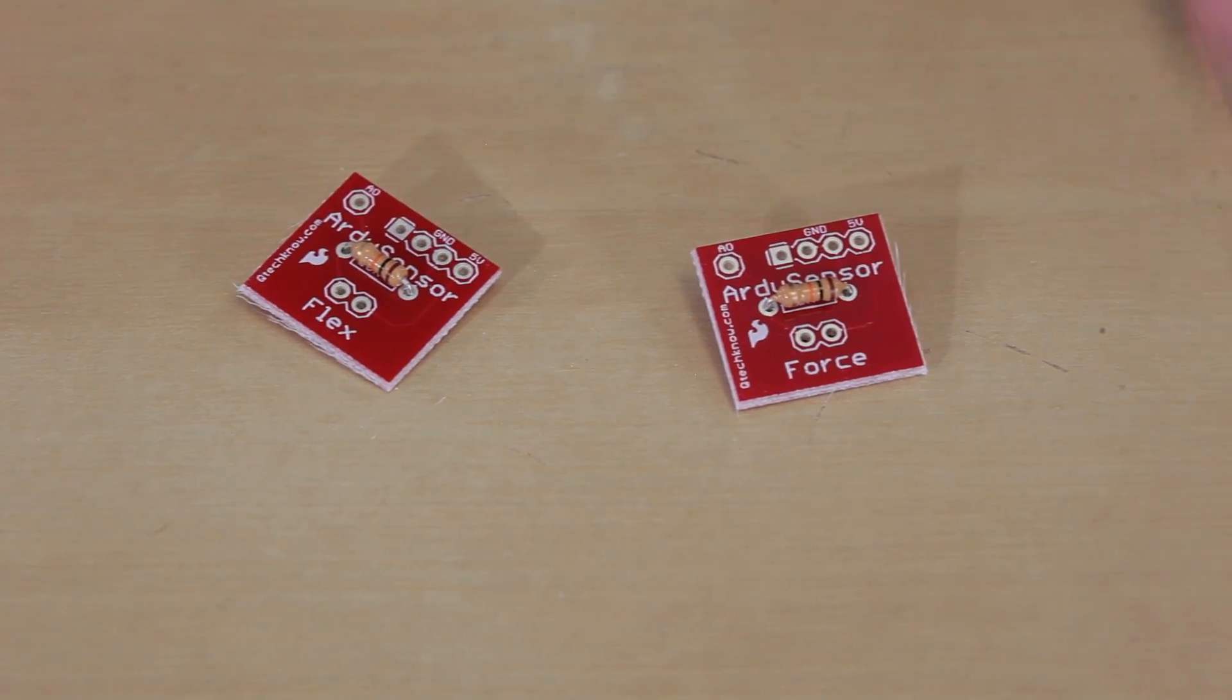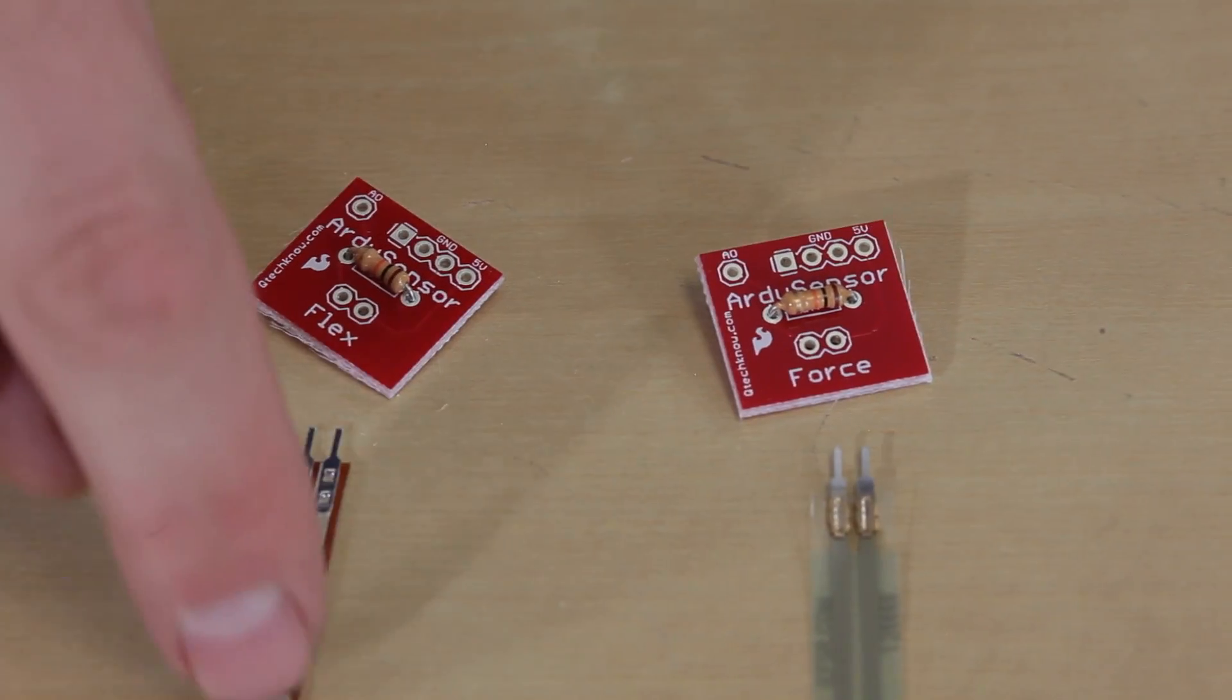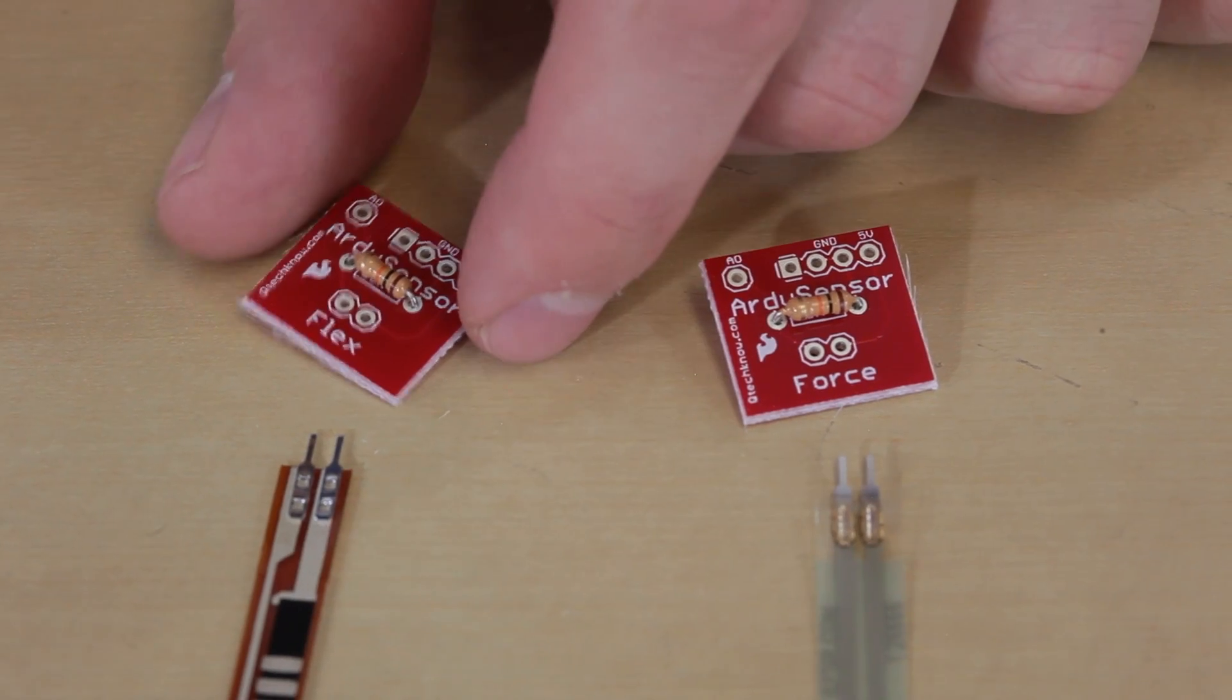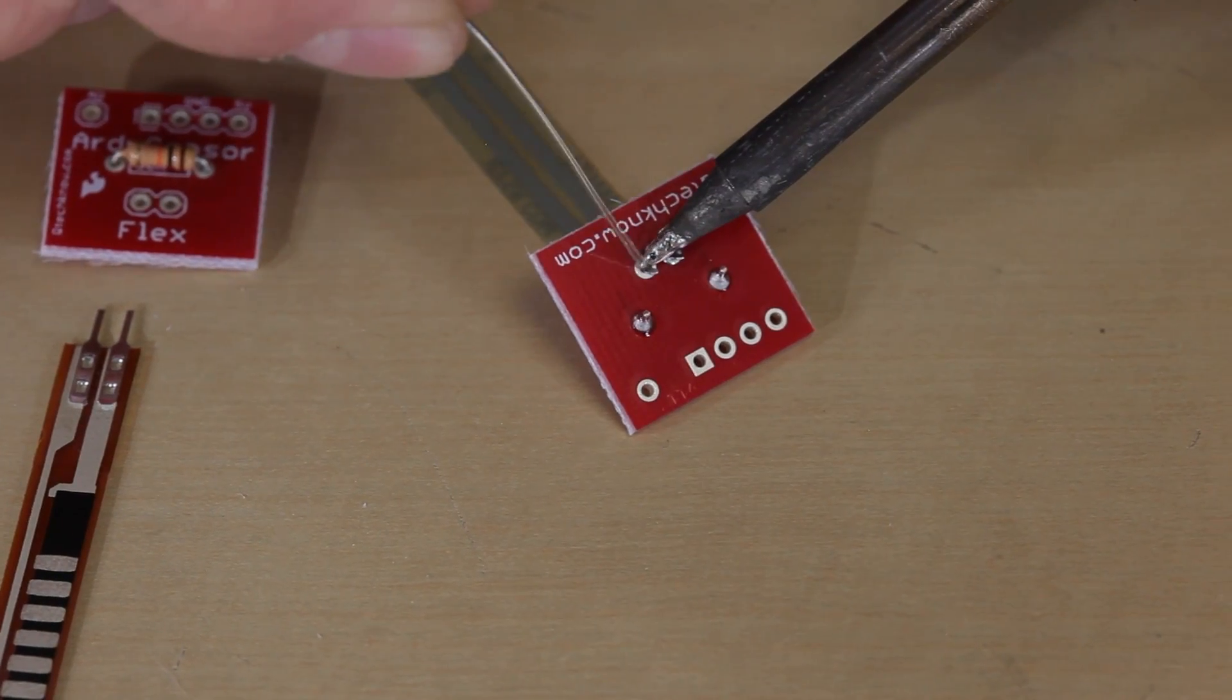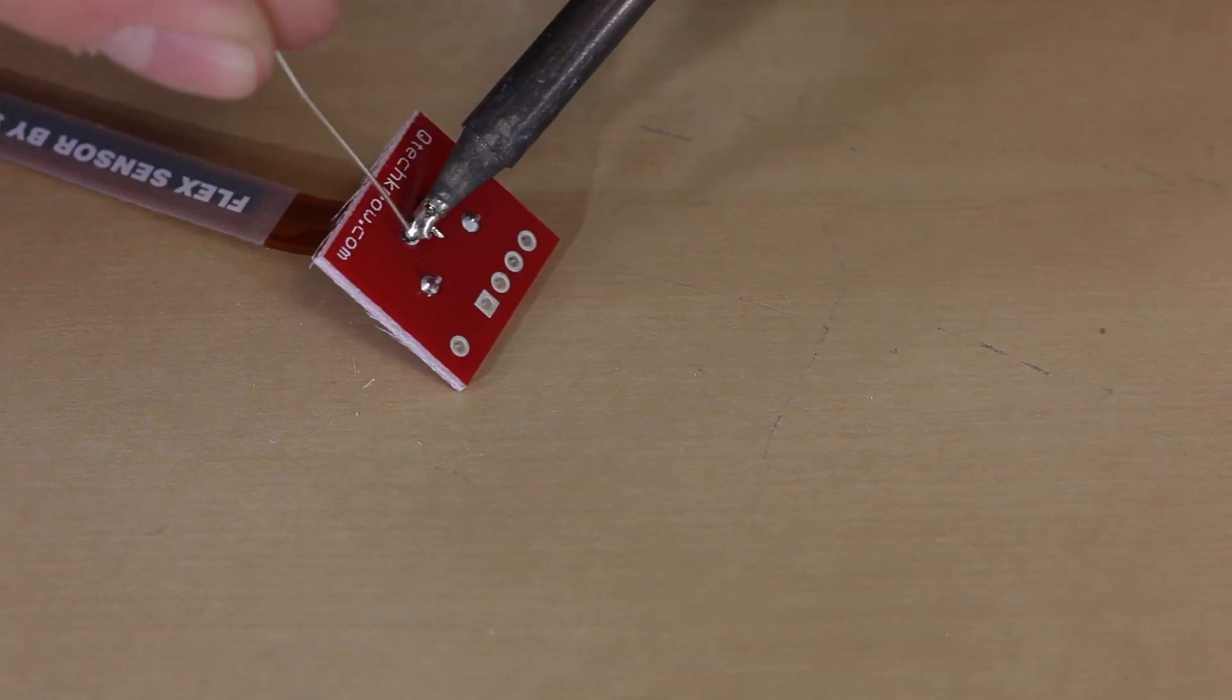Next up we're going to do both the force and the flex. Both of these have two pins, so we're just going to insert them into the holes, flip them over, and solder them from the backside. Be careful not to bend the leads too much as it might damage the sensor.